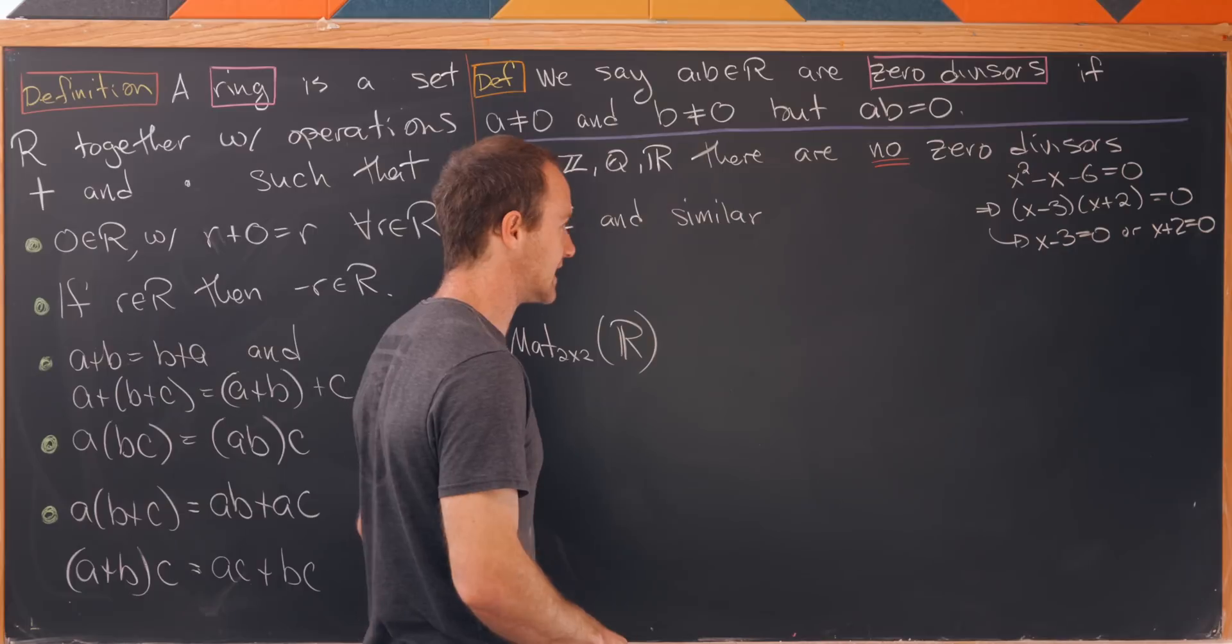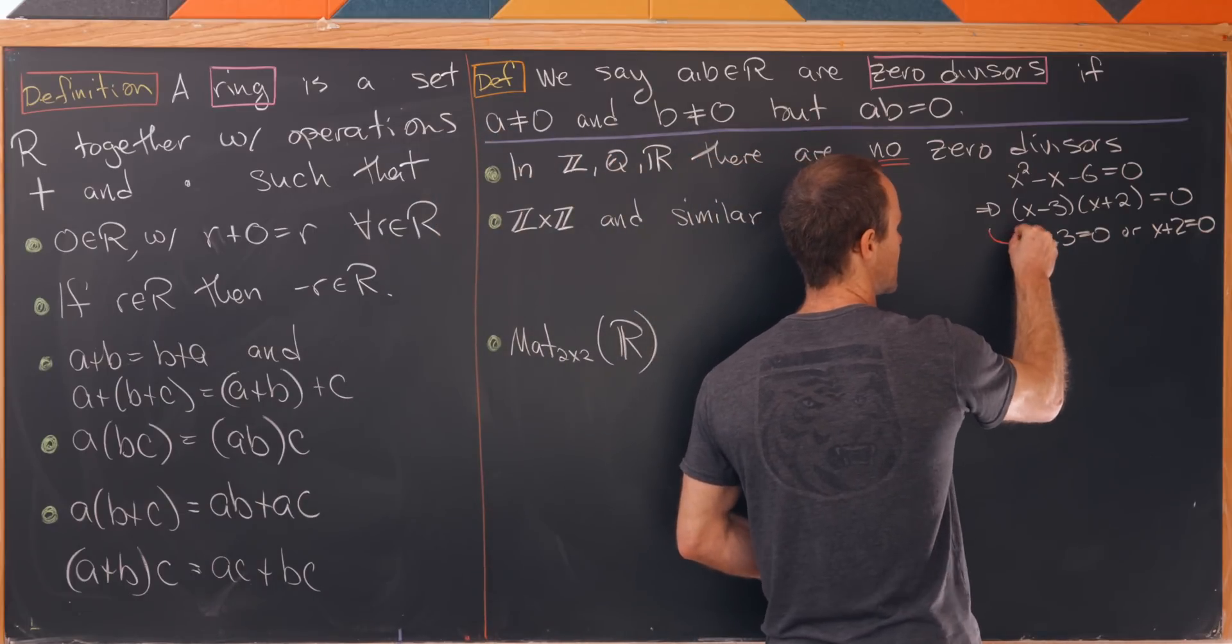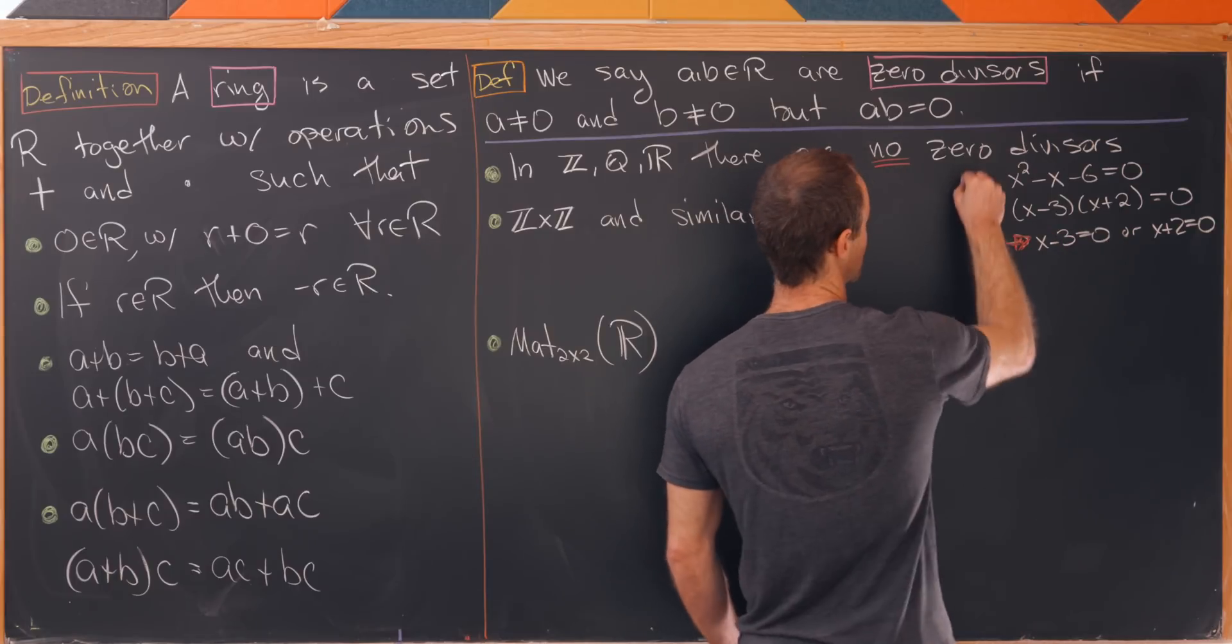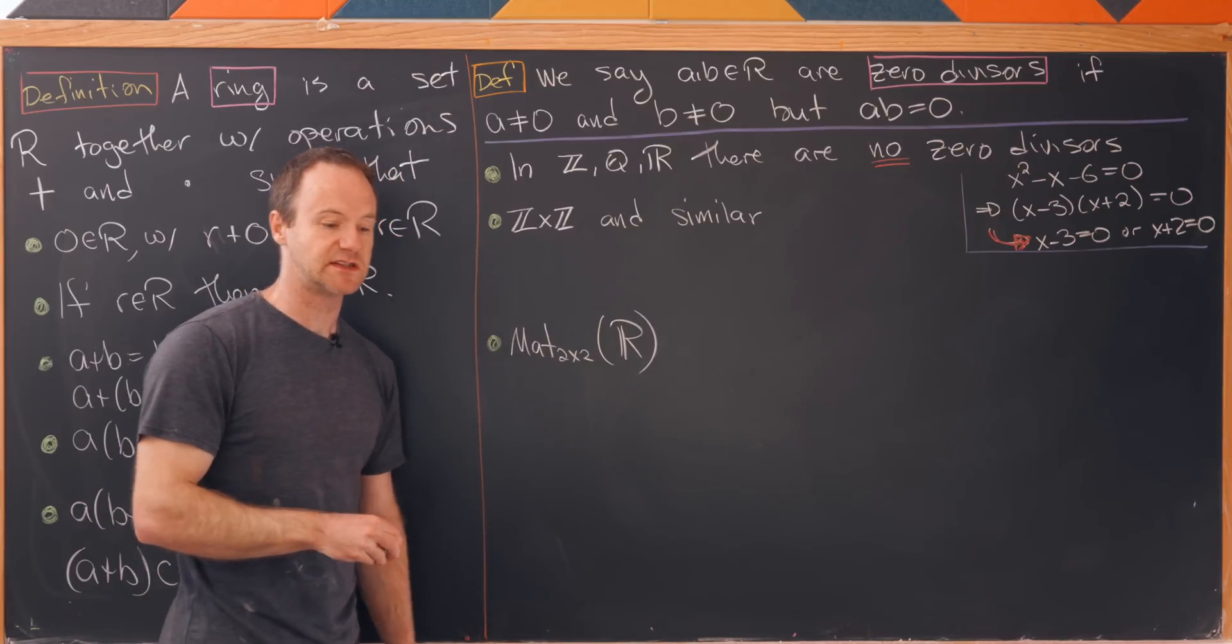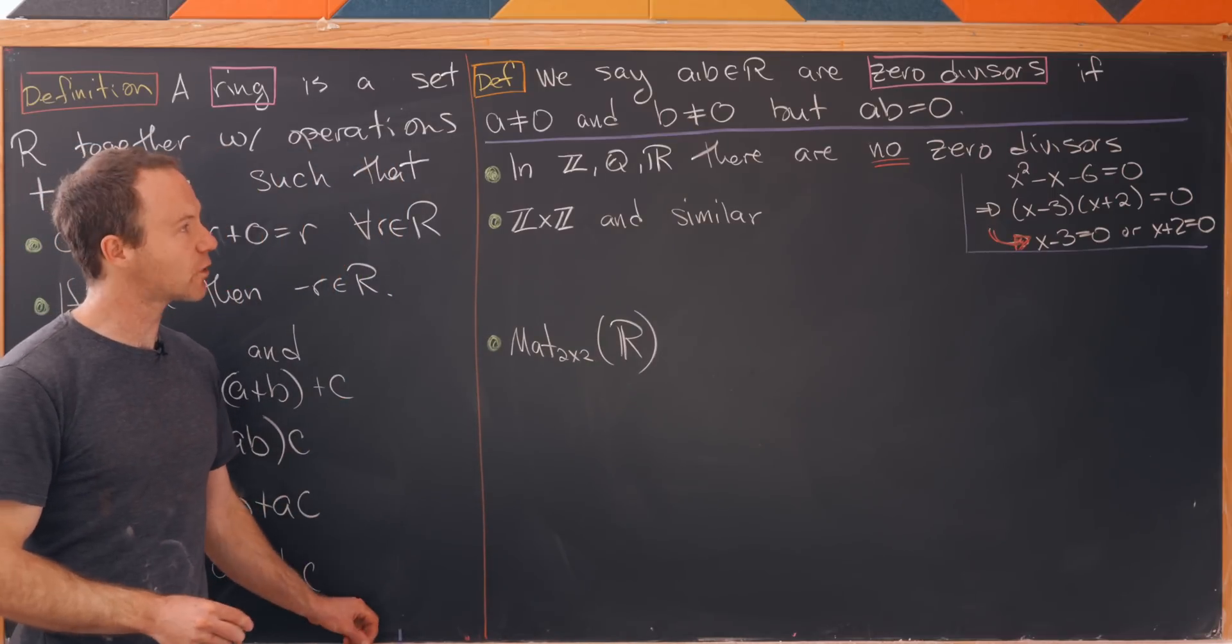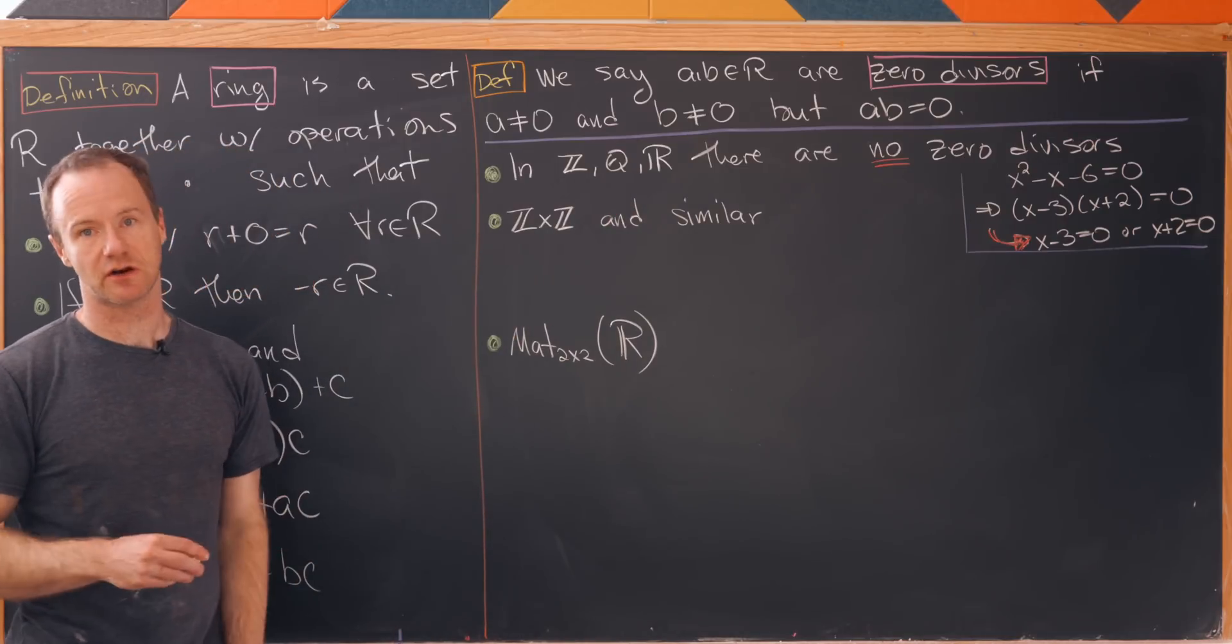But if you're in a land of zero divisors then you can't make this leap right here with this red arrow. That's because you're not guaranteed to have a product of two things equaling zero tell you that one of those is equal to zero. Of course it works in R, Q or Z but not in a general ring.